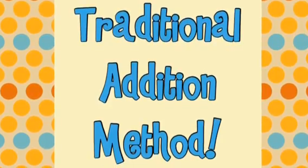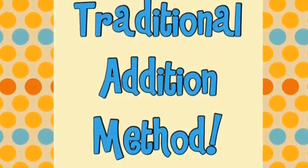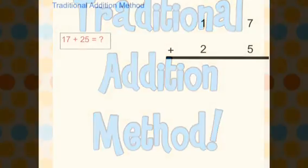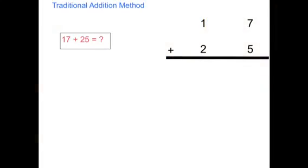Here is the traditional addition method. We are going to learn how to do the traditional addition method. We are going to solve the problem 17 plus 25 equals what? Here I have lined up my numbers, 17 plus 25, with the ones clearly in the ones place and the tens in the tens place.